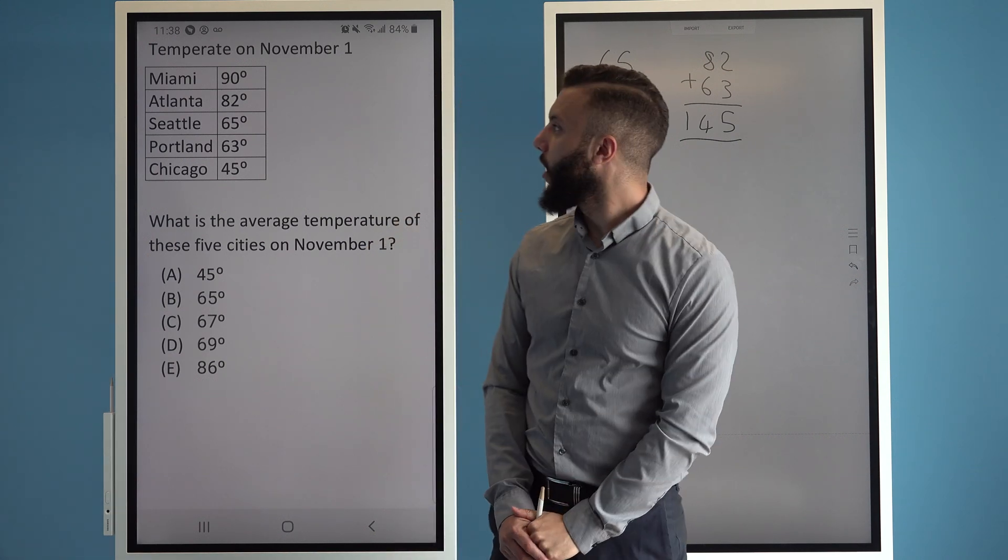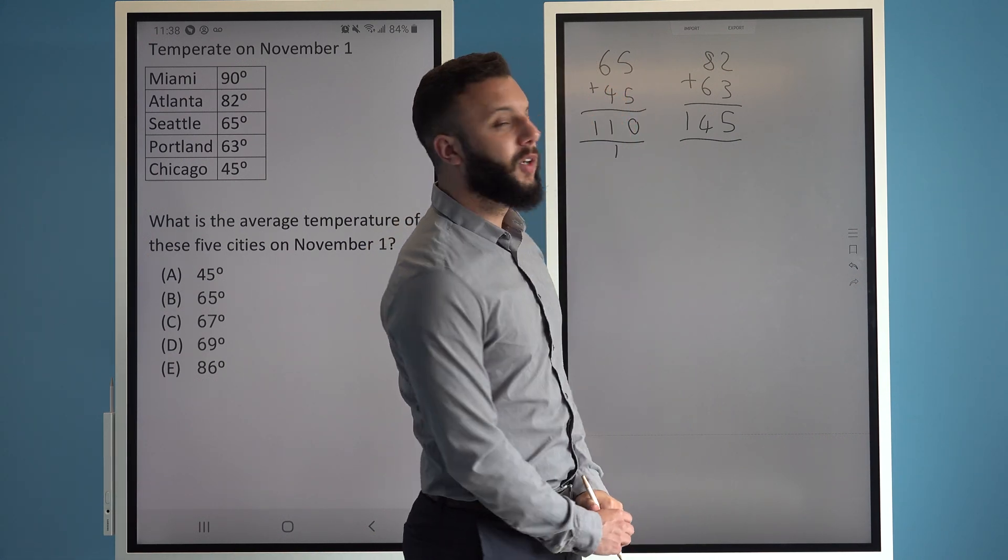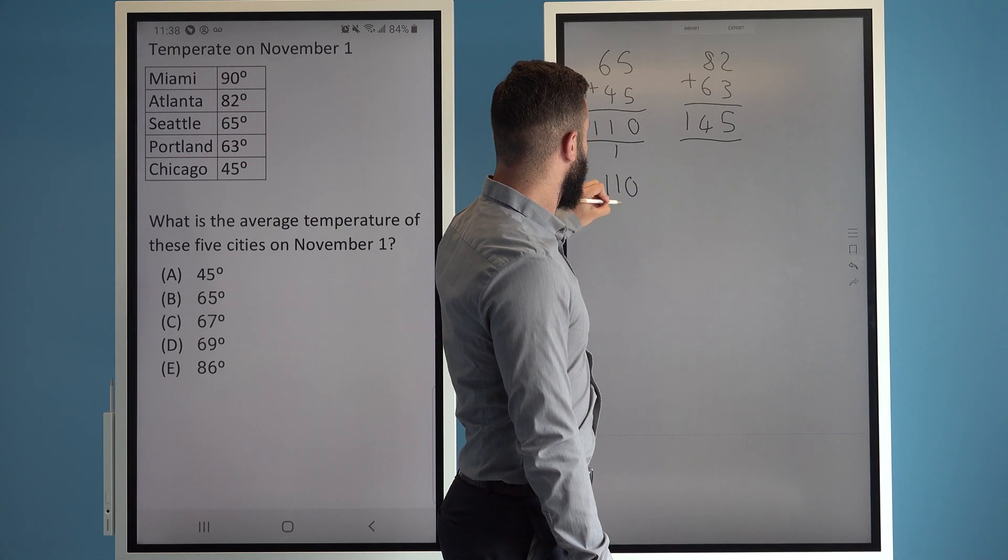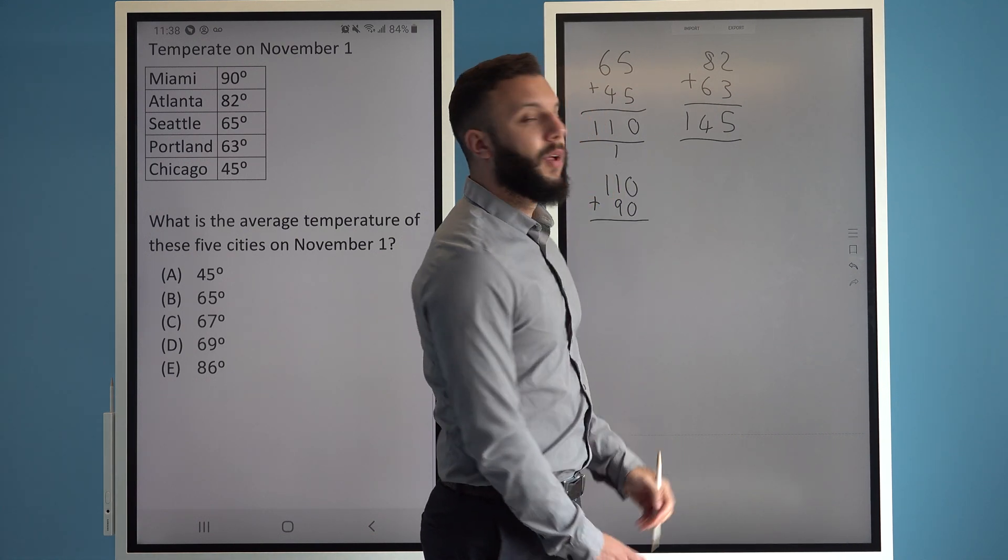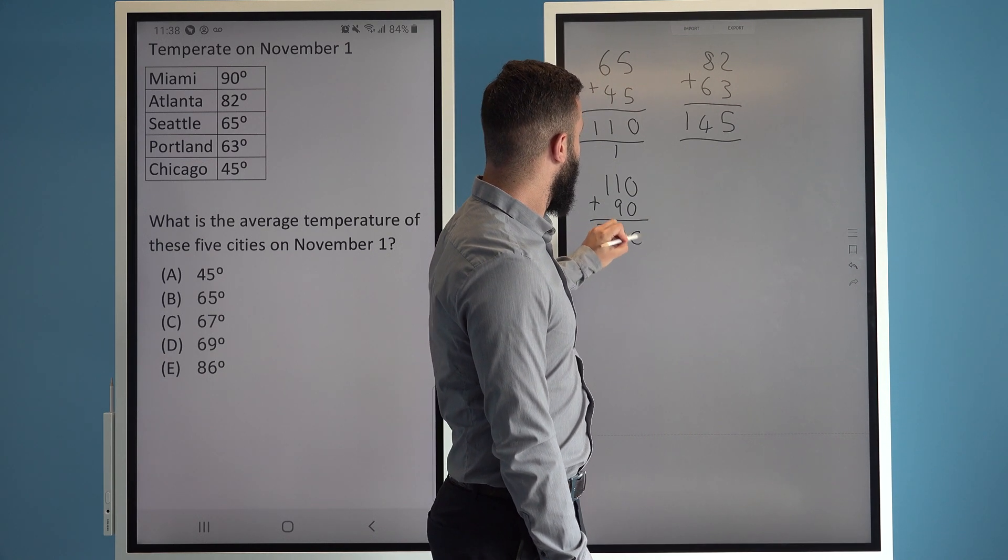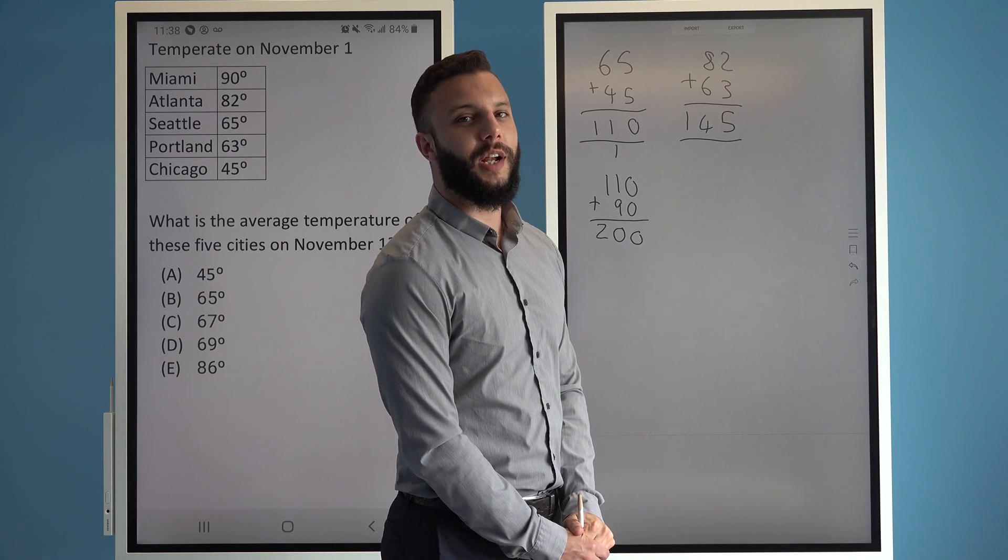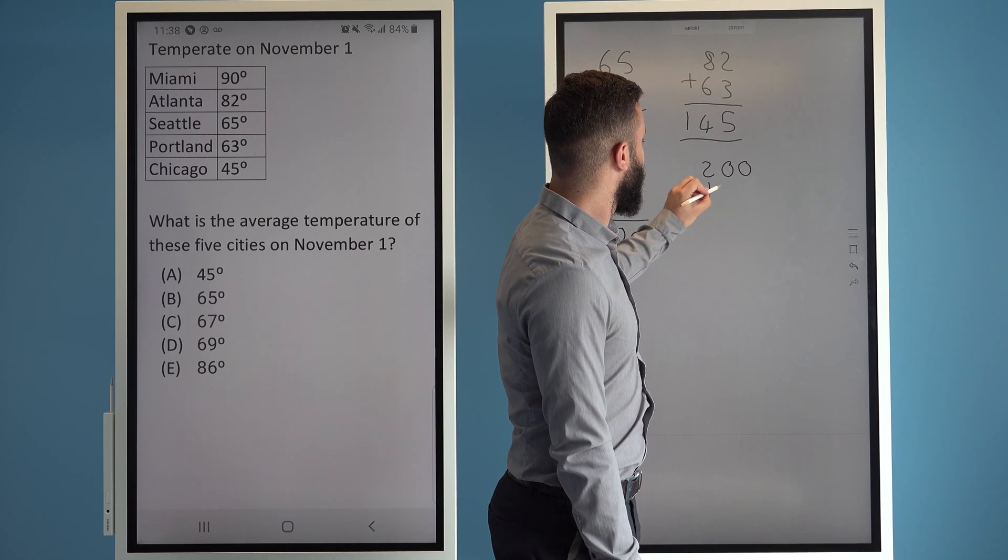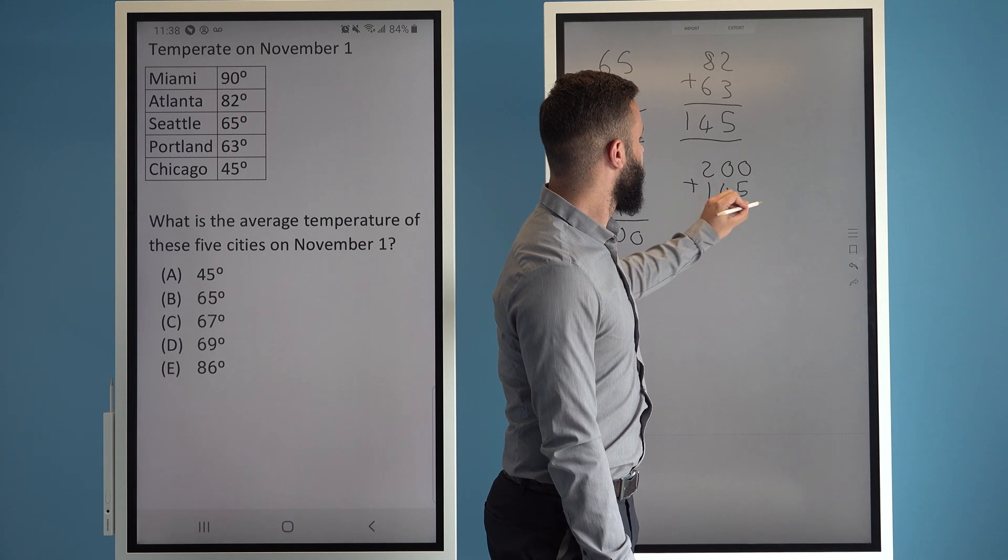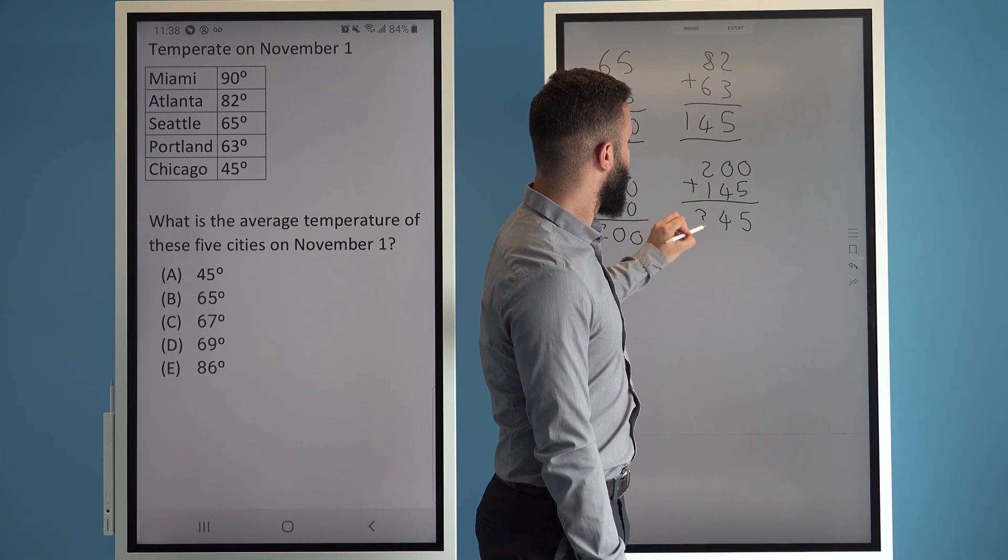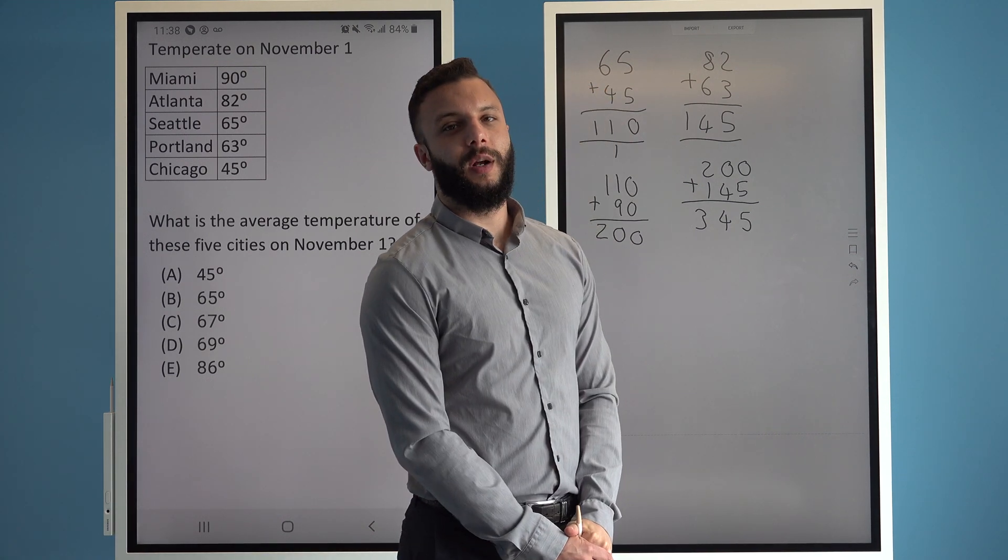Now I need to add the 90 which I'll add to 110 to get 200. So now I'll add 200 and 145. 5, 4, 3, giving us 345. So now I've added all my numbers together.